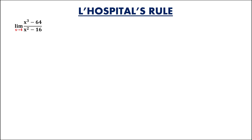For this problem, to evaluate the limits of indeterminate form using L'Hôpital's Rule. From the given, evaluating the limit using direct substitution as x approaches positive 4, this becomes 0 over 0 — that's indeterminate. Therefore, we cannot solve this limit using direct substitution.